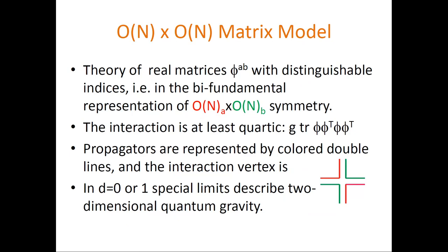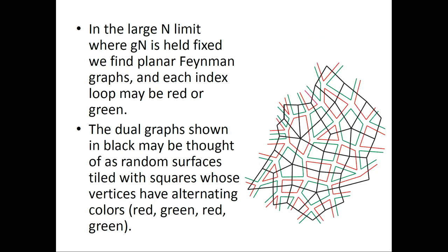So let me just talk a little bit about this passage from matrix to tensor models. If you look at the O(N) cross O(N) matrix model, it's the theory of general real matrices with distinguishable indices in the bi-fundamental representation of O(N) x O(N) symmetry. The minimal interaction is quartic, and you can basically label all the index flows of the first O(N) by red lines and second O(N) by green lines.